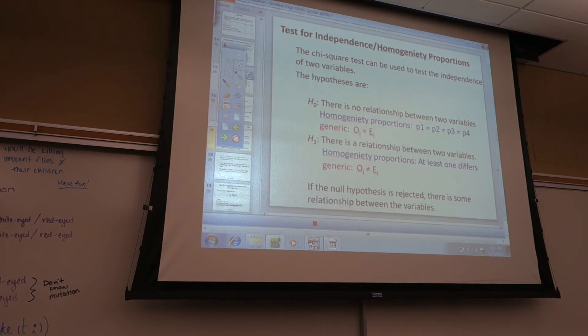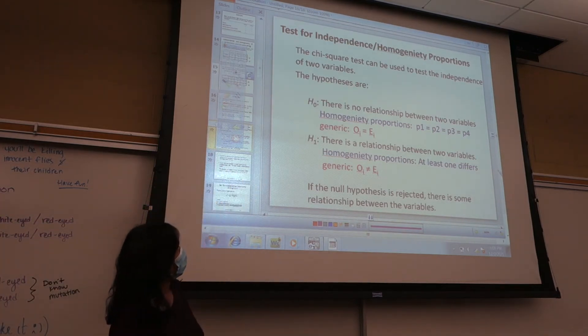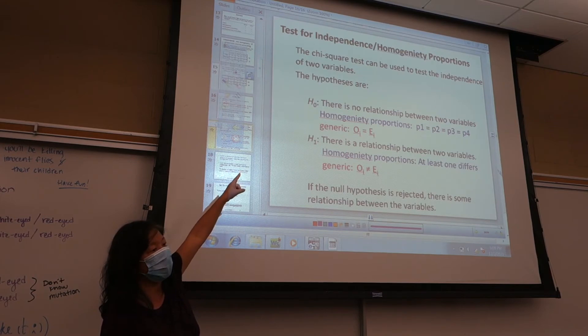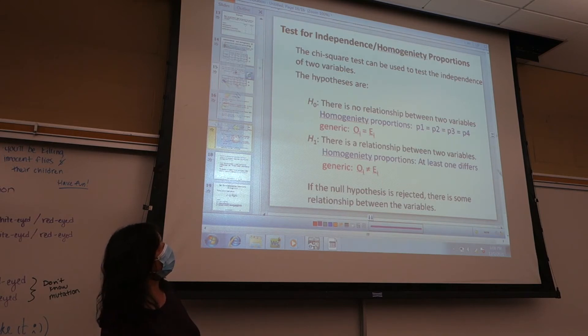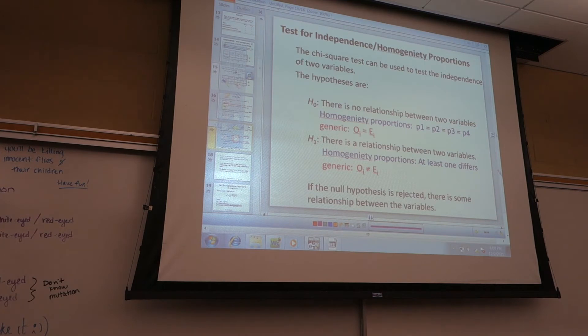Test for independence or homogeneity of proportions. The chi-square test can be used to test the independence of these. The hypotheses are H naught. Lindsay, what's my H naught? There's no relationship between two variables. Homogeneity of proportions: P1 equals P2 equals P3 equals P4. Generically, O sub i equals E sub i. All right, so again, H naught is always no. No difference. No relationship. Which also means that they're equal. P1 equals P2 equals P3 equals P4, however many proportions you have. Or generically, O sub i equals E sub i.